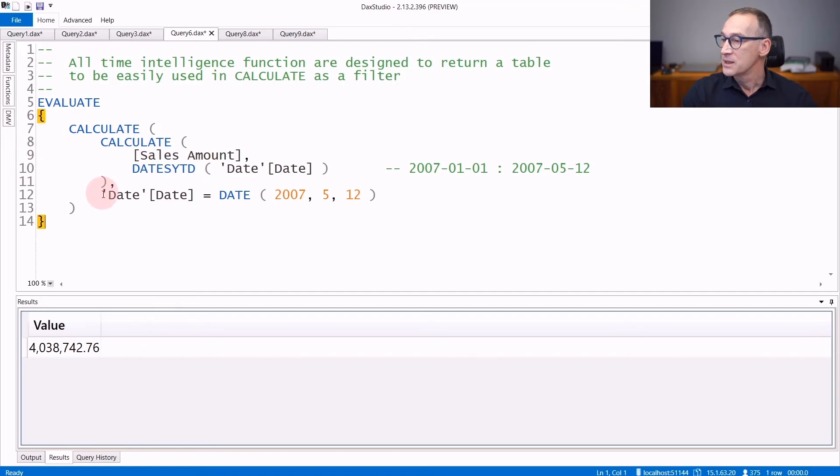This CALCULATE is executed inside another and outer CALCULATE that filters only one date, but because DatesYTD is present, the sales amount is computed for all the dates from the 1st of January 2007 up to the 12th of May 2007. In your code, you typically do not have the outer CALCULATE because that is coming from the Power BI report or whatever client tool is running the query and evaluating your measure.